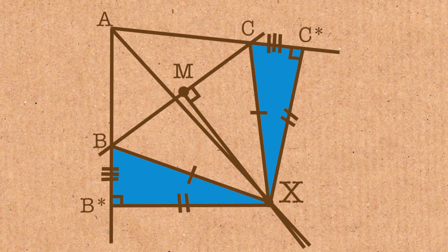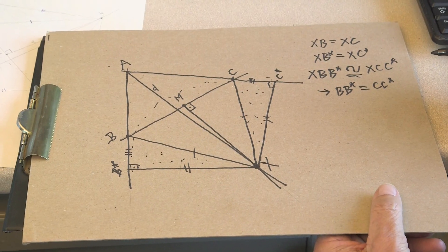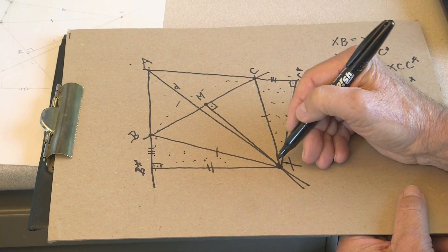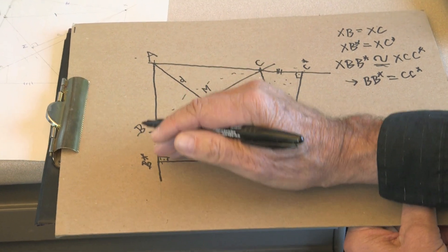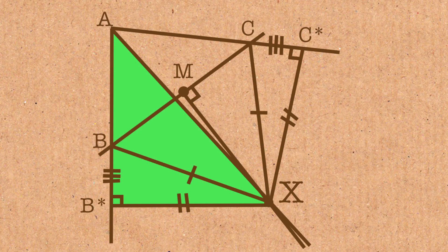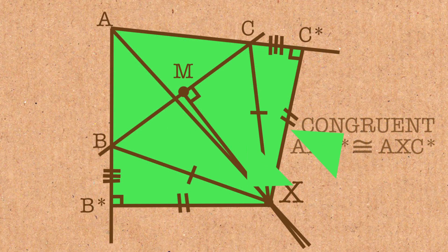Now, we have more congruent triangles. We also have the triangle AXB star being a mirror image of AXC star, and so those two triangles are congruent.